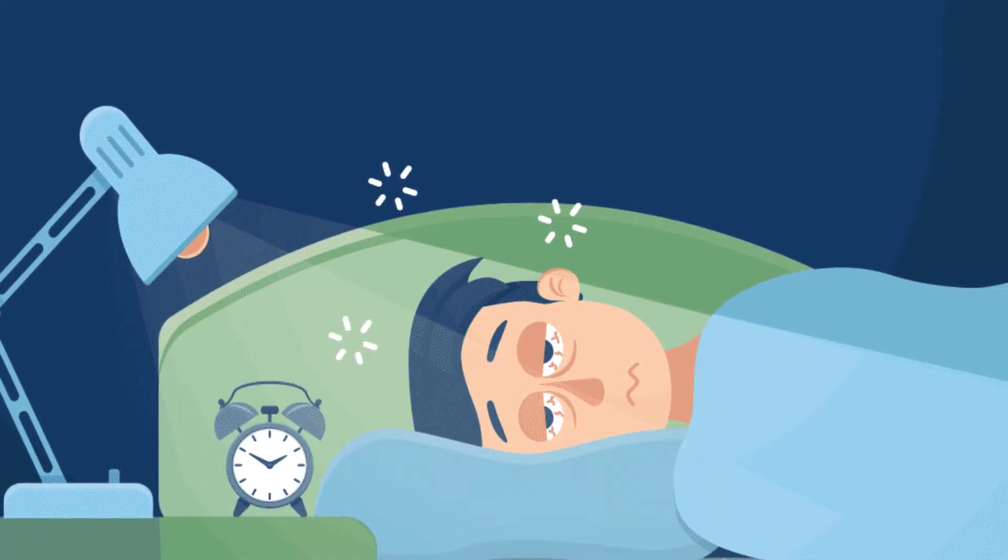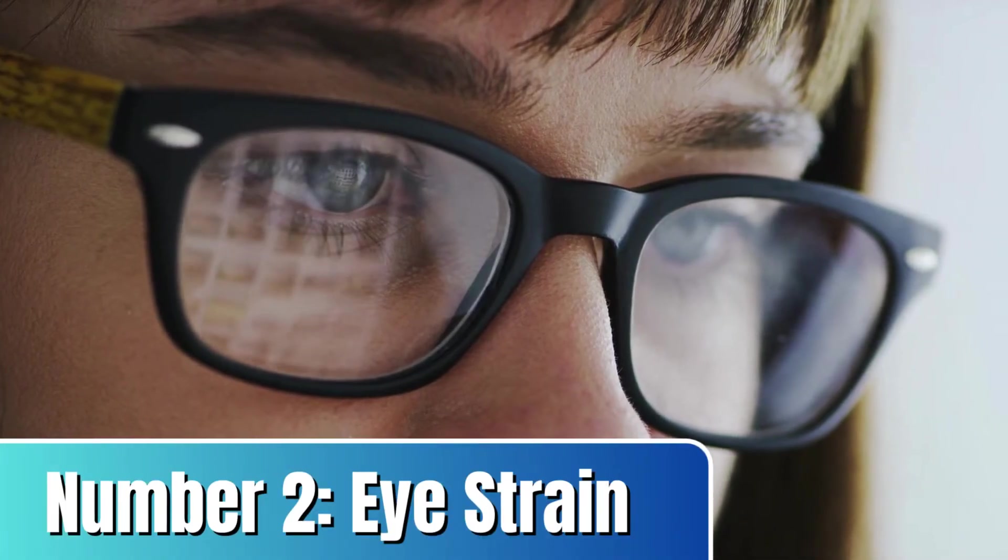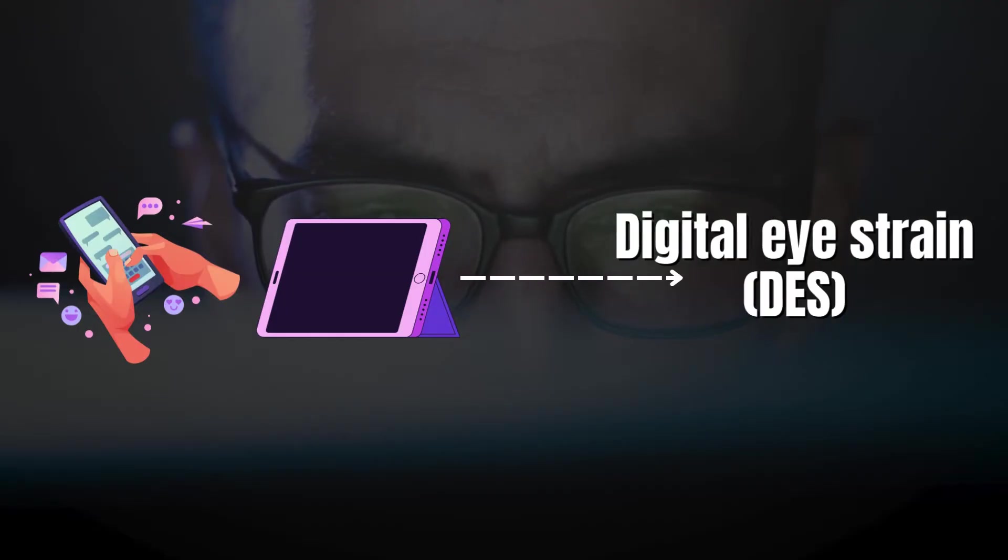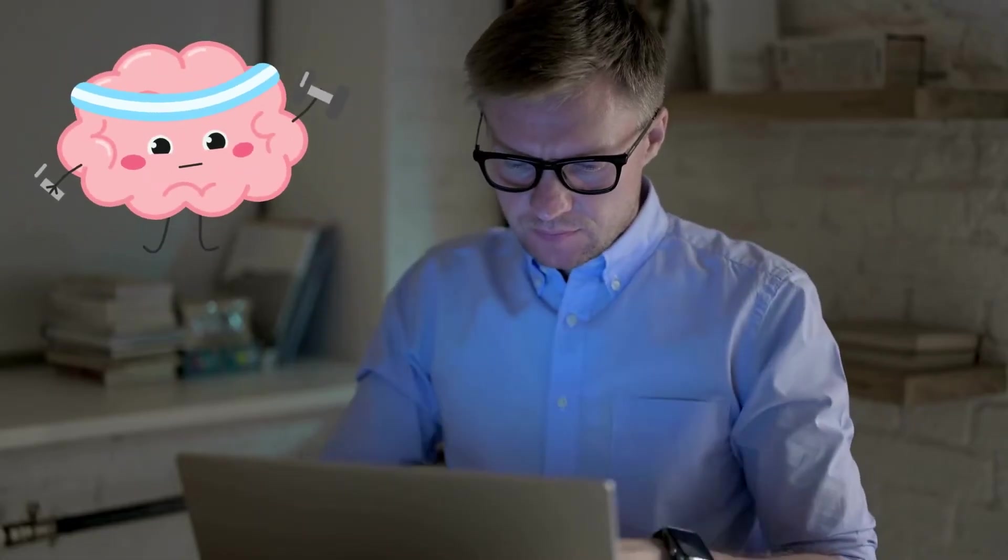One of these long-term effects is Number 2. Eye strain. Prolonged exposure to blue light emitted from digital screens like computers, smartphones, and tablets can lead to a condition known as digital eye strain, or DES for short. This is mainly because focusing on screens, especially with their high-contrast displays, requires constant effort.